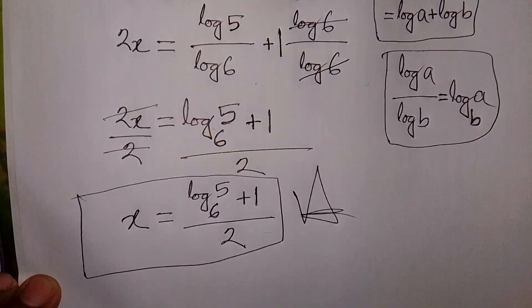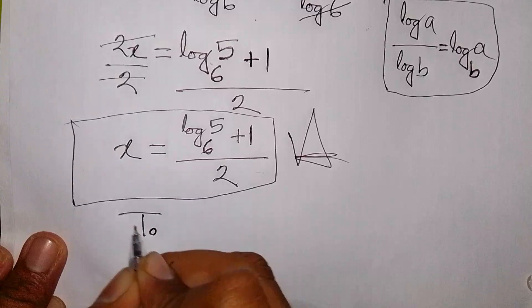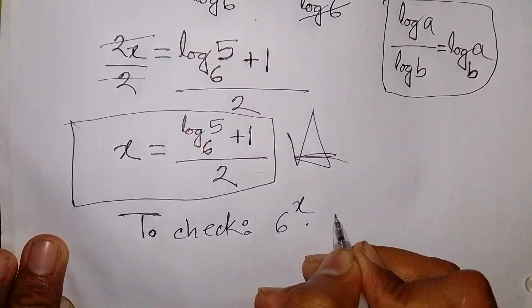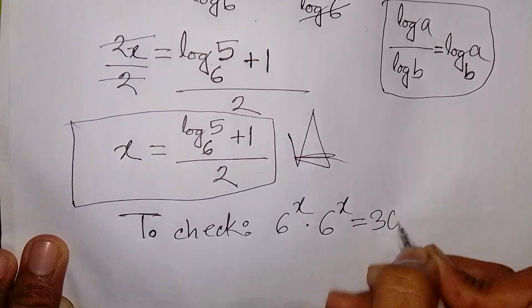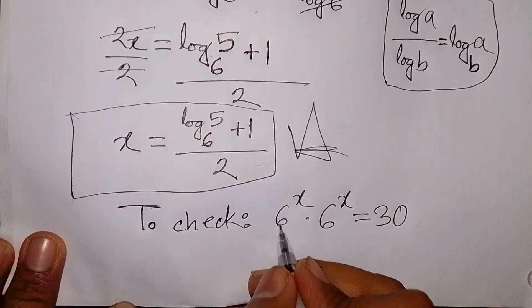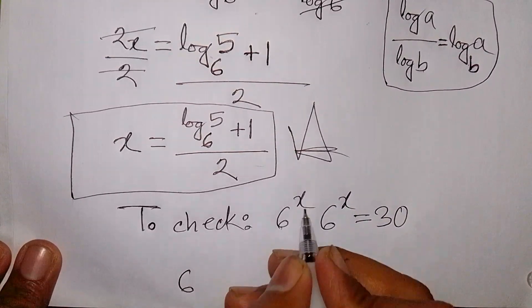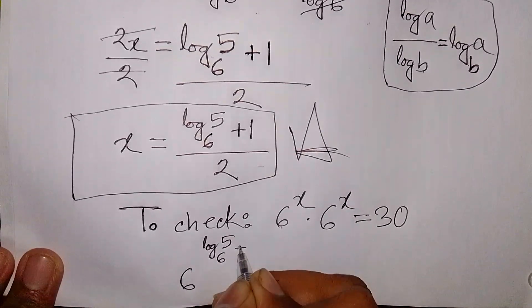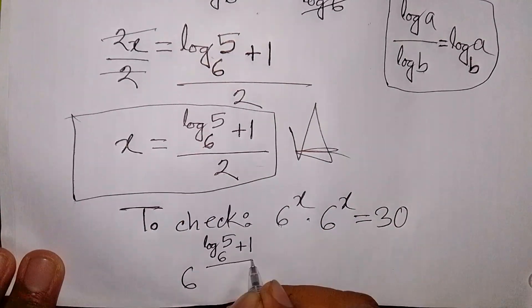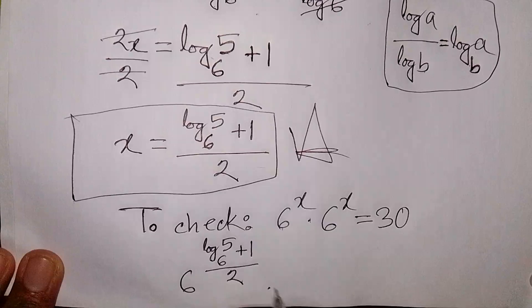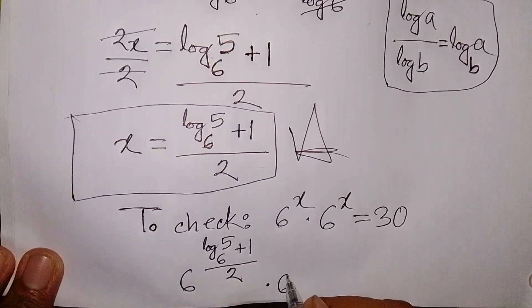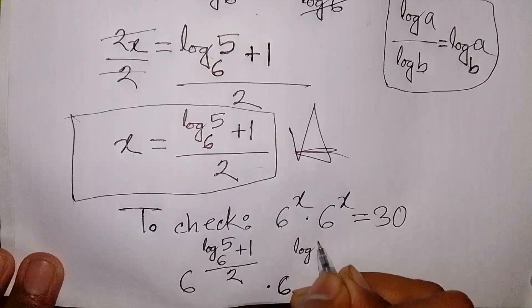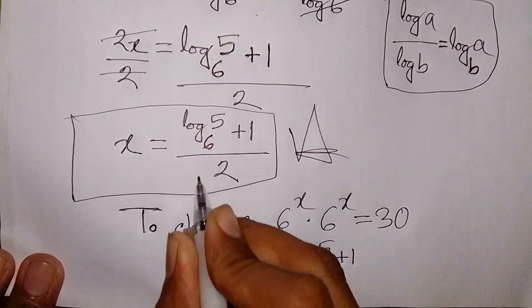Now to check: our equation is 6 to the power x times 6 to the power x is equal to 30. The value of x is log base 6 of 5 plus 1, over 2. So we have 6 to the power of (log base 6 of 5 plus 1 over 2) times 6 to the power of (log base 6 of 5 plus 1 over 2).